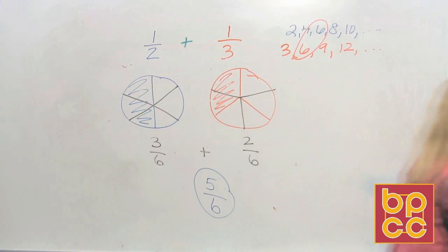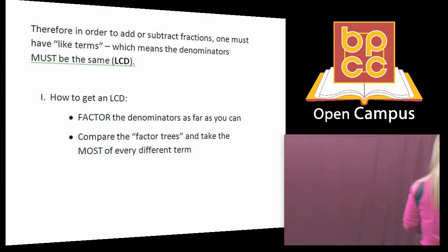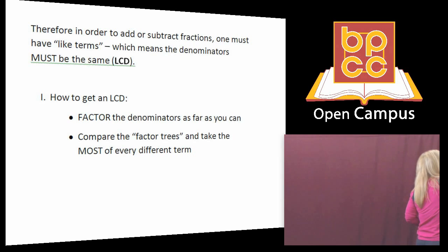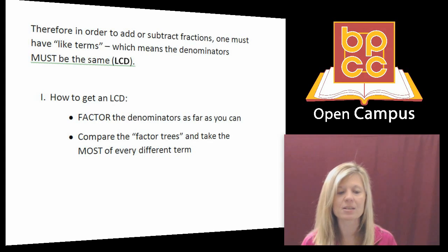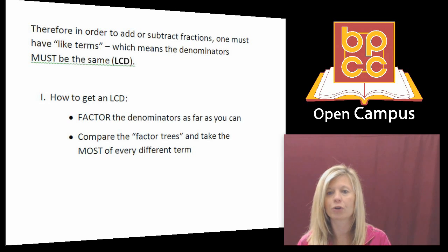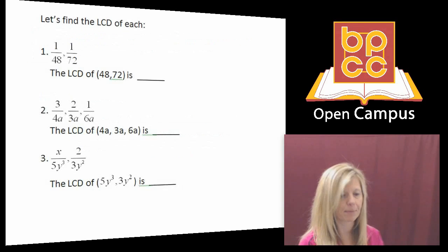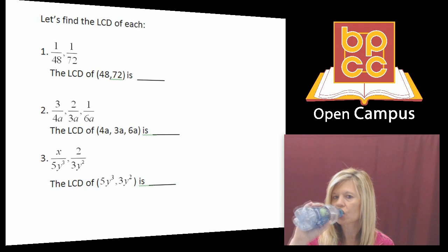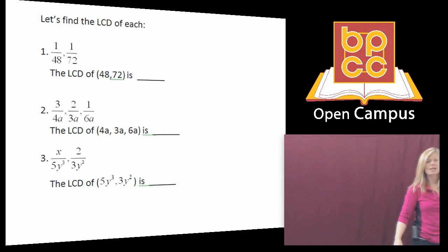Let's go to the class notes, because the LCD is the hardest part. To get a least common denominator, we've got to learn the correct way to do it. Most of you can look at denominators two and three and come up with six in your head, but we've got to talk about how to do this in algebra. I have the fractions one over 48 and one over 72, and you do not know the least common denominator of 48 and 72 off the top of your head. So I'm going to show you how to get that LCD.